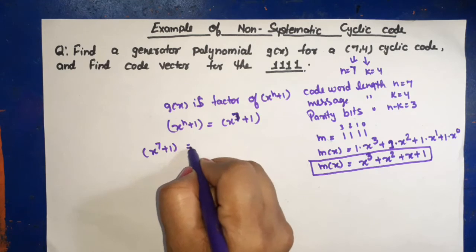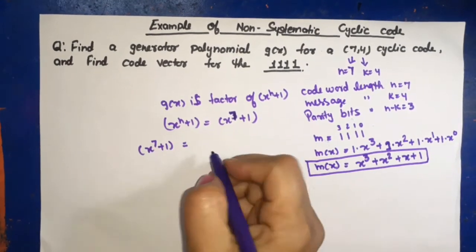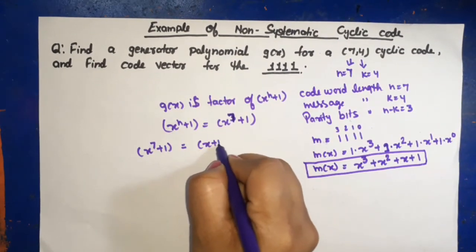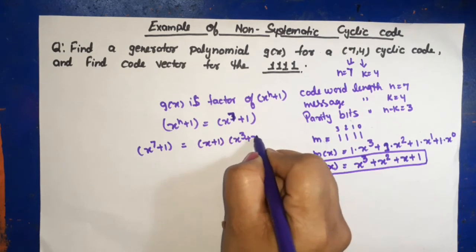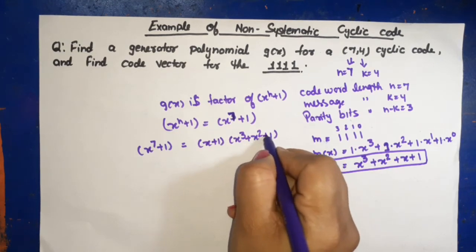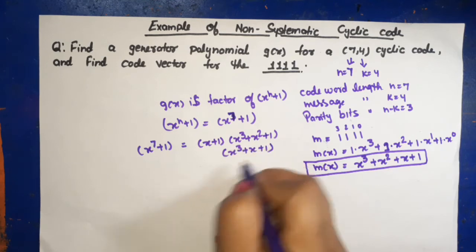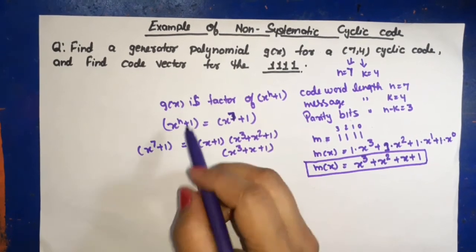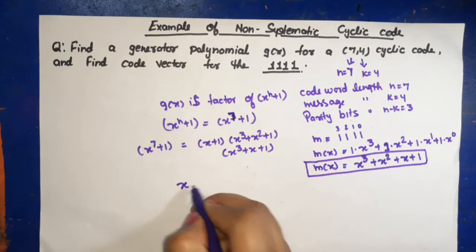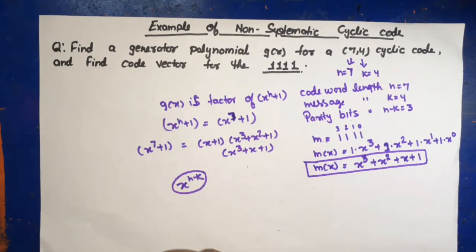And factor of x^7 plus 1 will be equal to (x plus 1)(x cube plus x square plus 1)(x cube plus x plus 1). And g(x) is the factor of x raised to power n minus k.